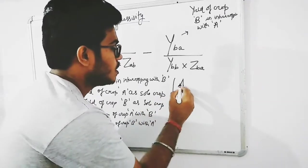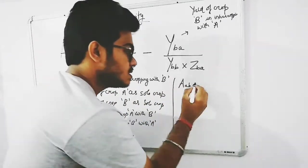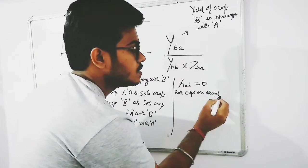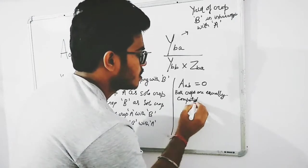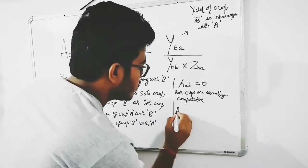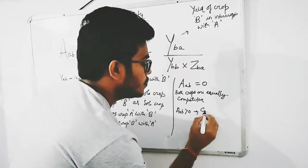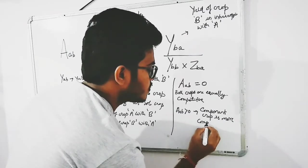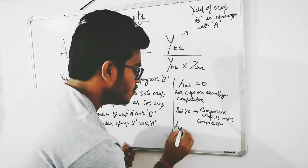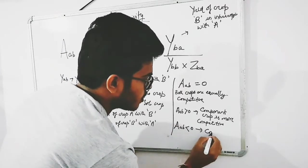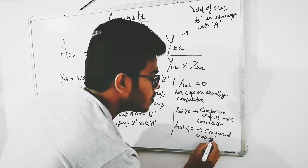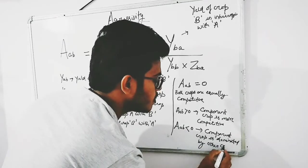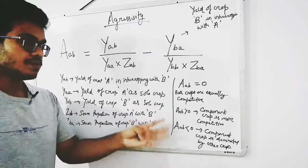If the value of aggressivity AB is equal to 0, then both crops are equally competitive to each other. If the value AB is greater than 0, then the component crop is more competitive than the main crop. If the value AB is less than 0, the component crop is dominated by the other crop.